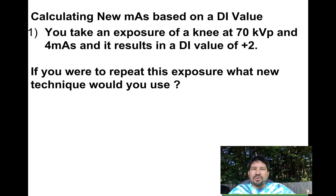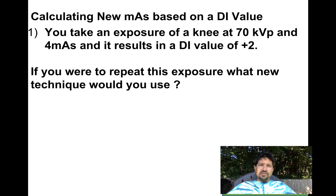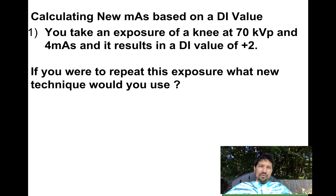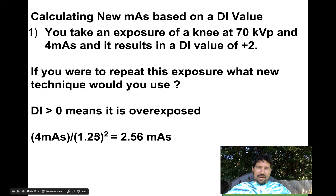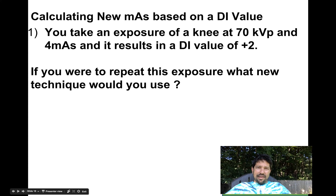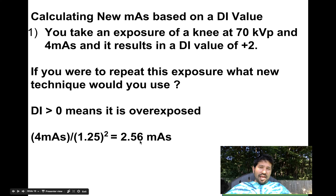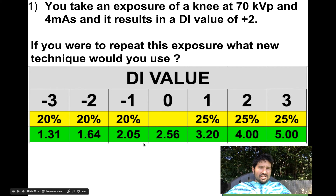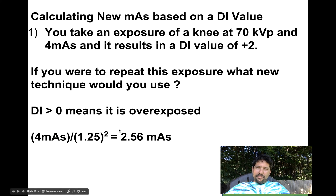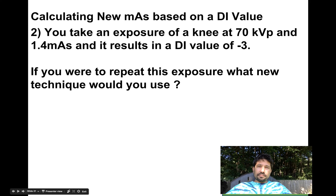So we can do some math with this. Here's an example problem: you take an exposure of a knee at 70 kVp and 4 mAs, and it gives you a DI value of positive 2. That tells me I'm overexposed. If I have a calculator with an x-to-the-n button, I could take 4 mAs and divide it by 1.25 squared — squared because that's my DI value of 2, and 1.25 because I'm on the positive side doing 25% steps. That would get me 2.56 mAs. So 4 mAs gave us a positive 2 DI, and 2.56 mAs would give us a DI of 0. That would be the perfect mAs.